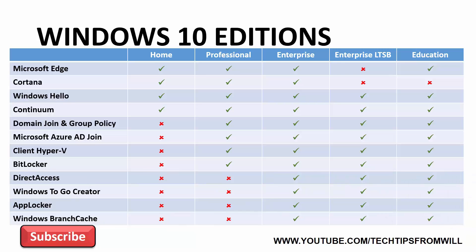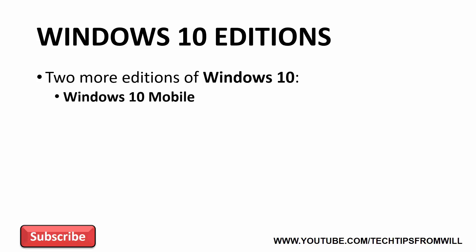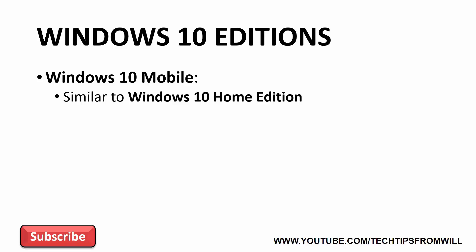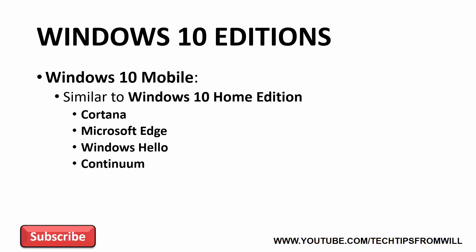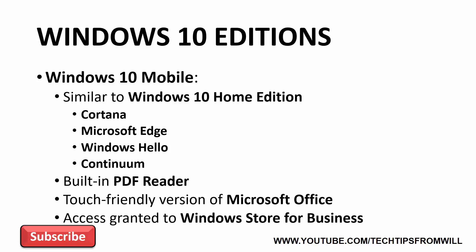That covers the main editions of Windows 10. However, I'd like to finish this video by looking at two more editions. These editions of Windows 10 are designed for smaller devices, such as mobile phones and small tablet computers. Windows 10 Mobile is, in many ways, similar to Windows 10 Home Edition and includes much of its feature set, including Cortana, Microsoft Edge, Windows Hello, and Continuum. Windows 10 Mobile also includes a number of other useful features, including a built-in PDF reader, a mobile touch-friendly version of Microsoft Office, and even grants access to the Microsoft Windows Store for Business, allowing you to find, purchase, and download apps for your mobile devices.